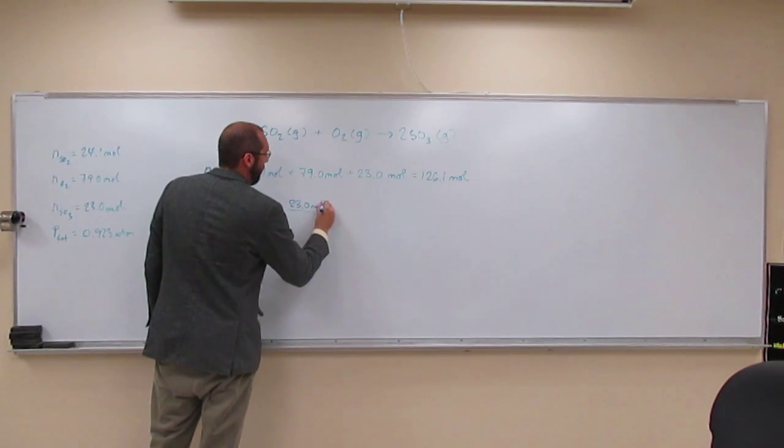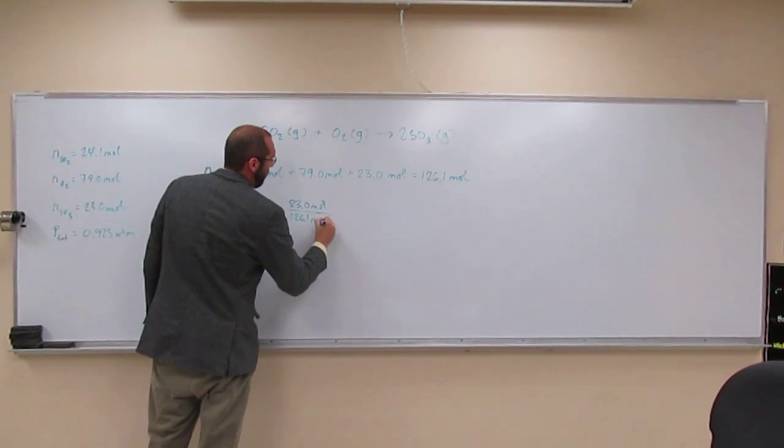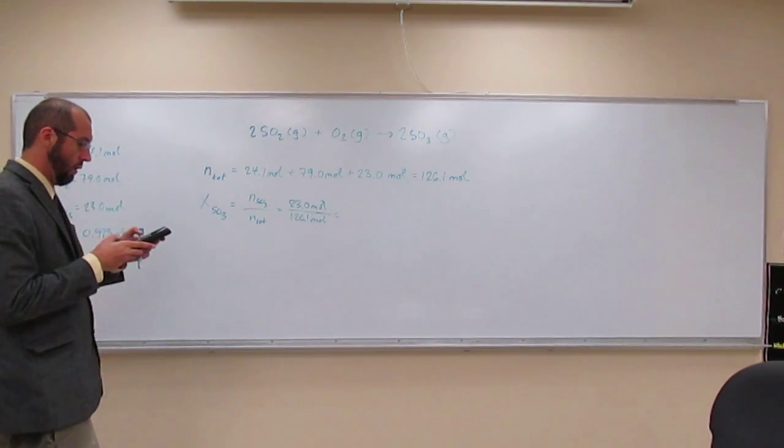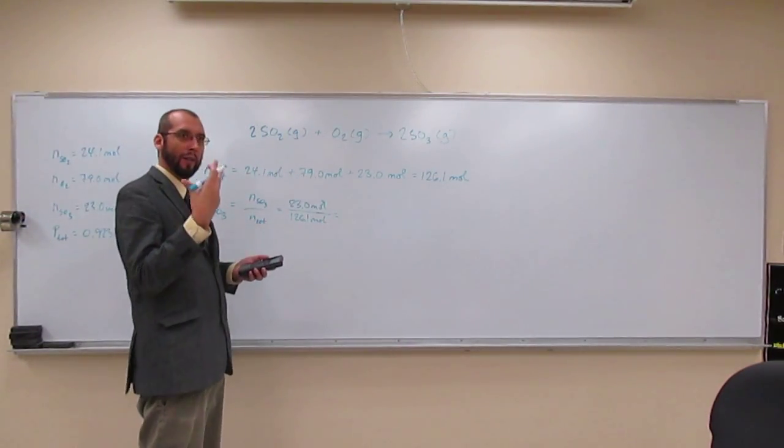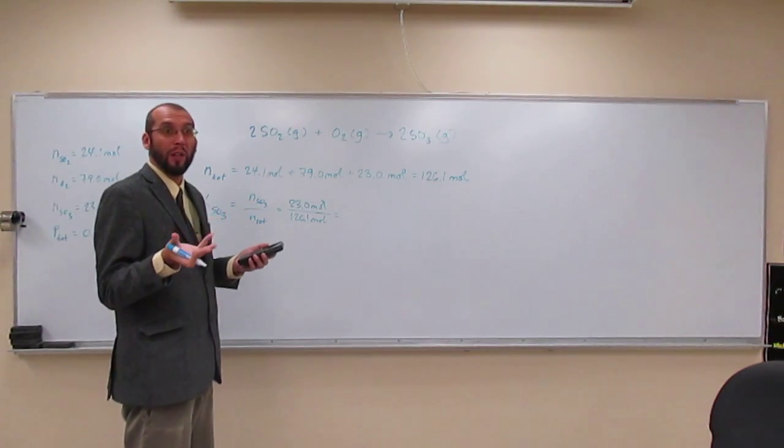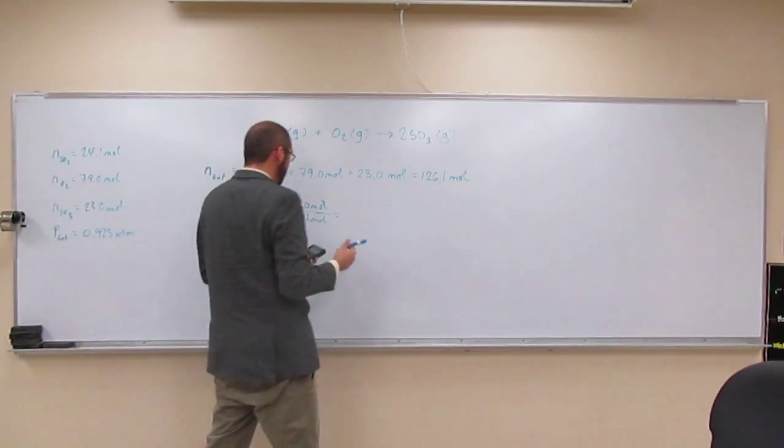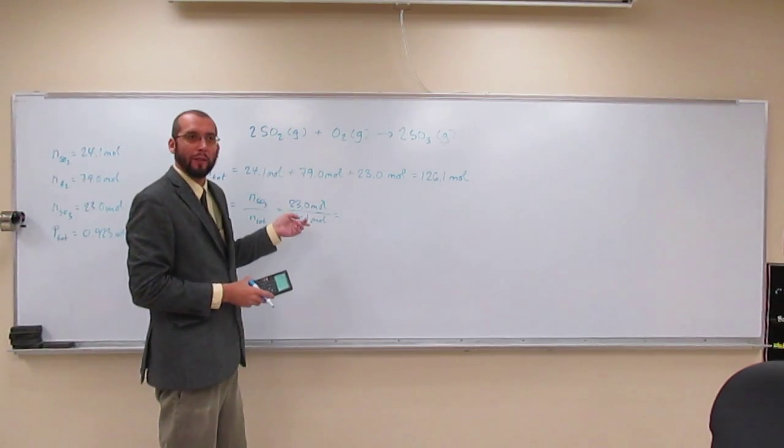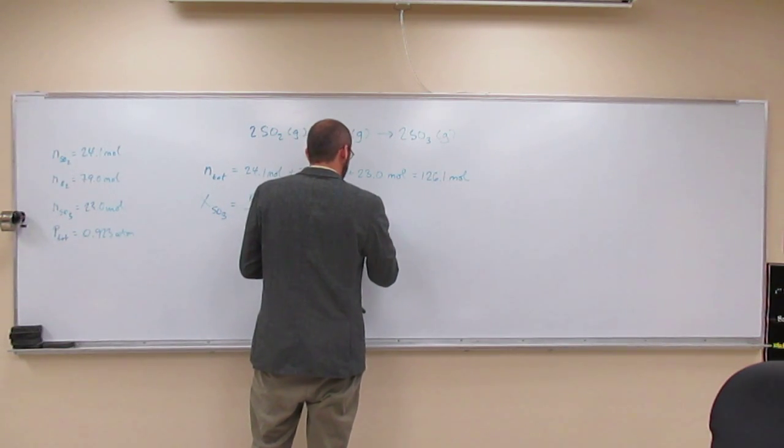23.0 moles divided by 126.1 moles. The mole fraction should be a number that makes sense to you. Like 18% or 0.18, that makes sense when you look at 23 compared to 126. If you got some number like 72, that doesn't make any sense. It's going to be a fraction: 0.182 with three significant figures.